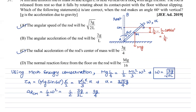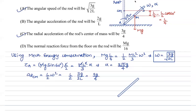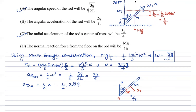For the normal reaction from the floor on the rod, we draw a free body diagram. Two forces act from the ground: normal force N upward and friction horizontally. The angle is 60 degrees. The center of mass has two accelerations: tangential acceleration a_t and radial acceleration a_r toward center A. The value of a_t = (l/2)·α = (l/2)·(3√3g/4) = 3√3g/8.